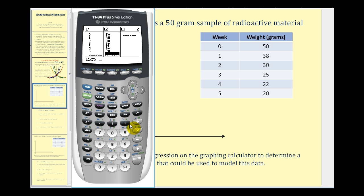Next, to create the scatter plot, we have to set up our window to make sure the points of our scatter plot show on the screen. So we're going to press the window key. Notice the x values go from zero to five. So I'm going to set the x minimum at negative one and the x maximum at six. And we'll go ahead and scale this by ones.